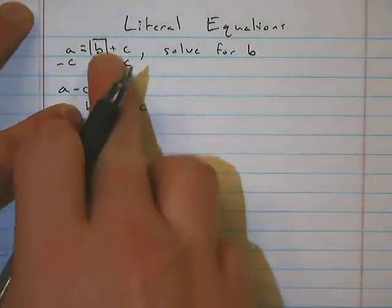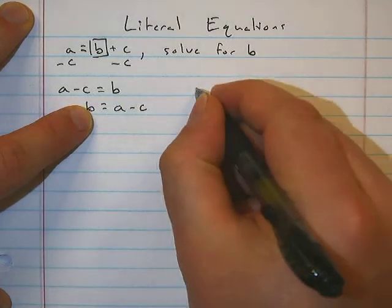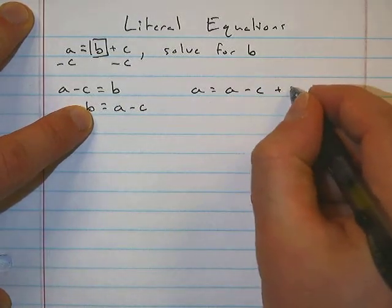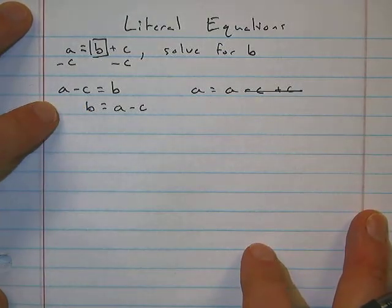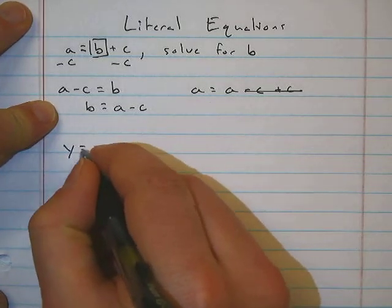You could plug that back in and see that it works. So instead of b we'll rewrite the equation with a minus c in there. We have a equals a minus c plus c, so those cancel out, a equals a, so we got the right answer. Let's turn up the difficulty just a little bit.